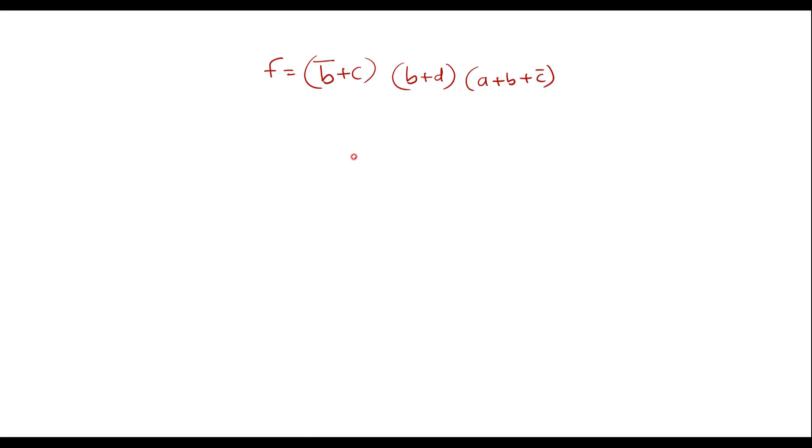Now let me draw the logic circuit. So here we have b bar plus c. So I need one inverter. The input is b, here we have b bar. And another input is c. We need one OR gate. So output of this will be b bar plus c.